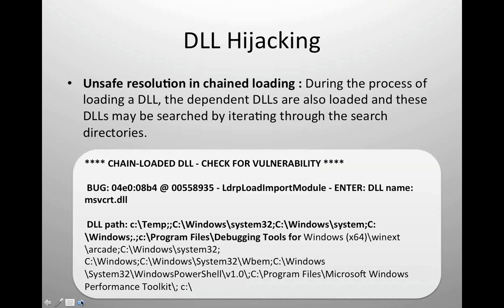The third and final scenario is unsafe resolution in chained DLL loading, which is the most difficult to avoid. Here, I have provided the fully qualified path for my DLL — I've asked the OS to load a DLL from C:\Windows\System32 or some other path. But that particular DLL depends on some other DLL for which the OS does a recursive search. A hacker knowing that my program depends on ABCD.DLL, and ABCD.DLL itself depends on many other DLLs, can corrupt any of those dependent DLLs and place it anywhere in the search order.